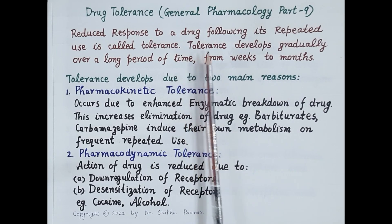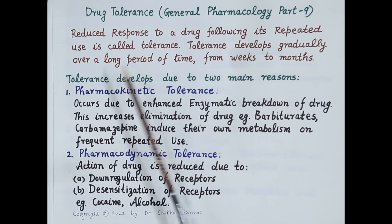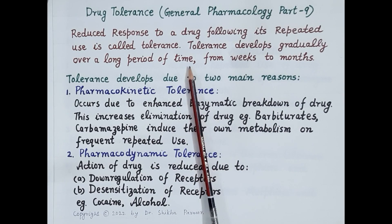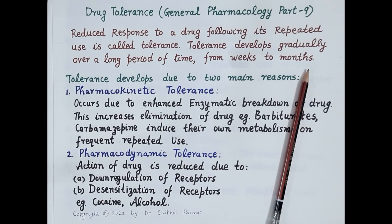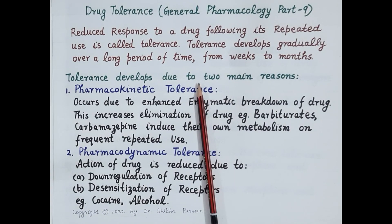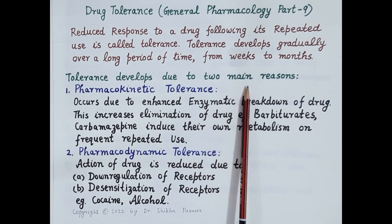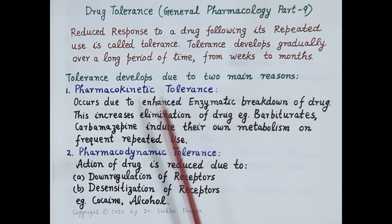It is very important to remember that tolerance develops gradually over a long period of time, from weeks to months. Tolerance develops to drugs like salbutamol, cocaine, morphine, barbiturates, etc.